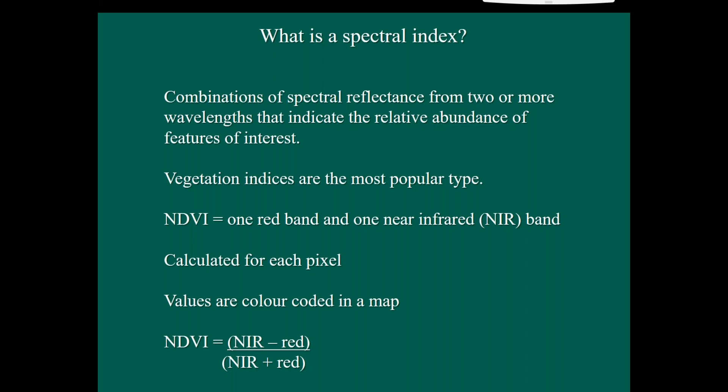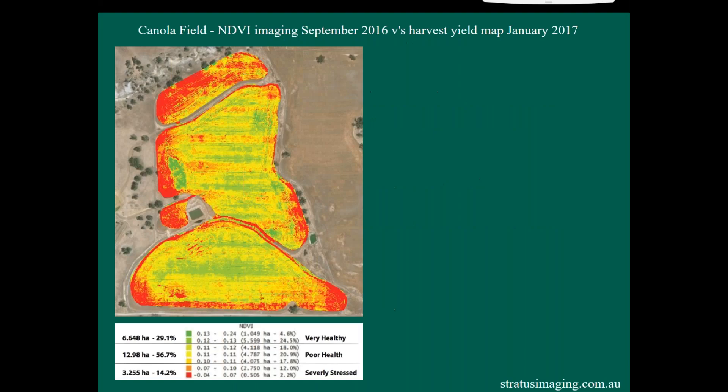So let's have a look at why that's able to contrast what it is we're after. So firstly, I'll give an example of how this is mapped. This is an example from Stratus Imaging where they've run the NDVI and they've mapped it and color-coded it. And they've put it into what they think there is three classes from very healthy plants to poor health and severely stressed plants.